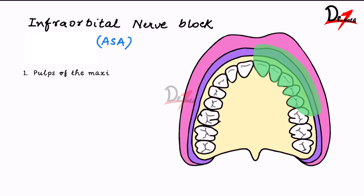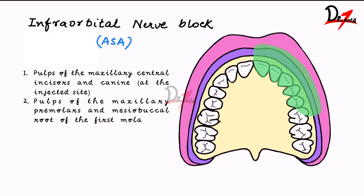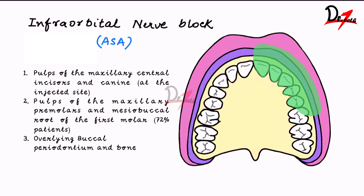It includes the pulp of the maxillary central incisor and the canine, then the pulps of the maxillary premolars and the mesobuccal root of the first molar. The mesobuccal root of the first molar is anesthetized in 72% of patients only. It also covers the overlying buccal periodontium and bone, the lower eyelid, lateral aspect of the nose, and the upper lip.